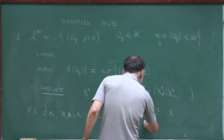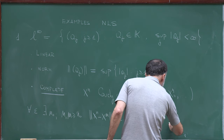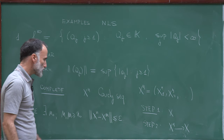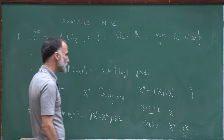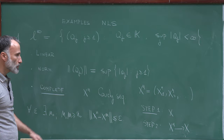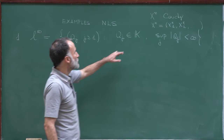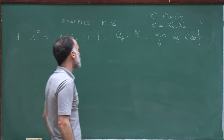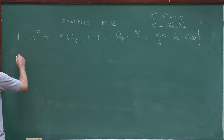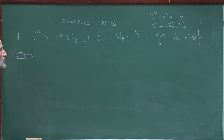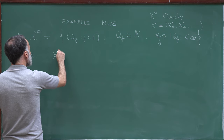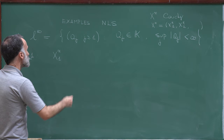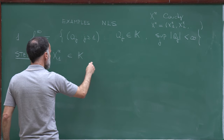In step one, I construct my candidate x. I claim that if you consider just the first coordinate of each sequence xn, those elements of K form a Cauchy sequence. To prove this, fix epsilon positive. Since xn is Cauchy, there exists n₀ such that if n and m are larger than n₀, then the norm of xn minus xm is bounded by epsilon. The norm is the supremum over j of |xnⱼ − xmⱼ|.